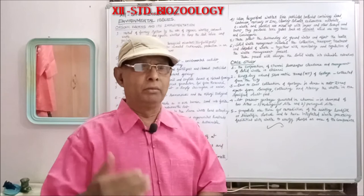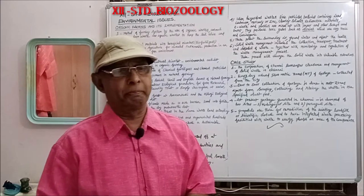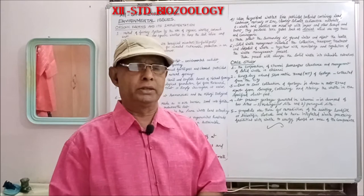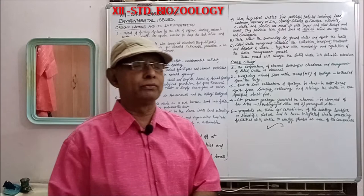Soil fertility will be increased due to the use of organic waste: crop waste, animal waste, farming waste, aquatic waste, etc. Other biological materials with beneficial microbes, that is bio-fertilisers, are also used in agriculture for increased sustainable production in an eco-friendly, pollution-free environment.